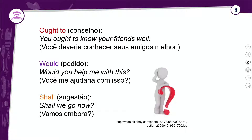O 'ought to' expressa conselho, assim como o 'should', mas entrou em desuso. Você o encontrará mais em livros de literatura; no dia a dia é muito raro. Tem tradução de 'deveria'. Exemplo: 'You ought to know your friends well' — você deveria conhecer seus amigos melhor. Poderia substituir por 'should', mas sem o 'to': 'You should know your friends well'.